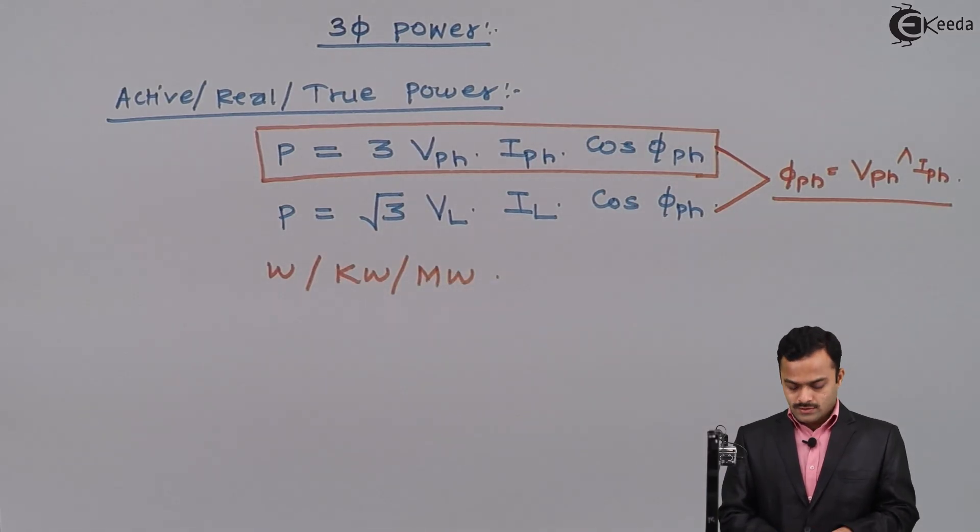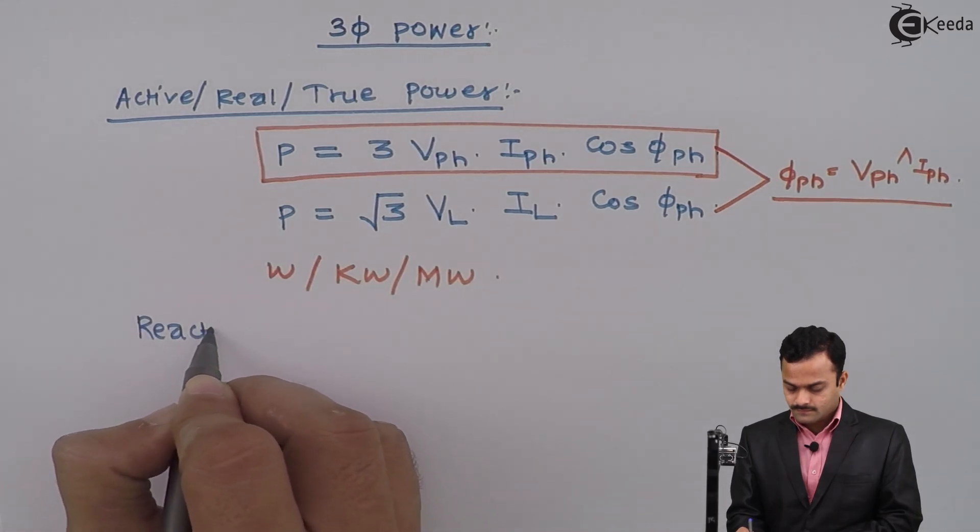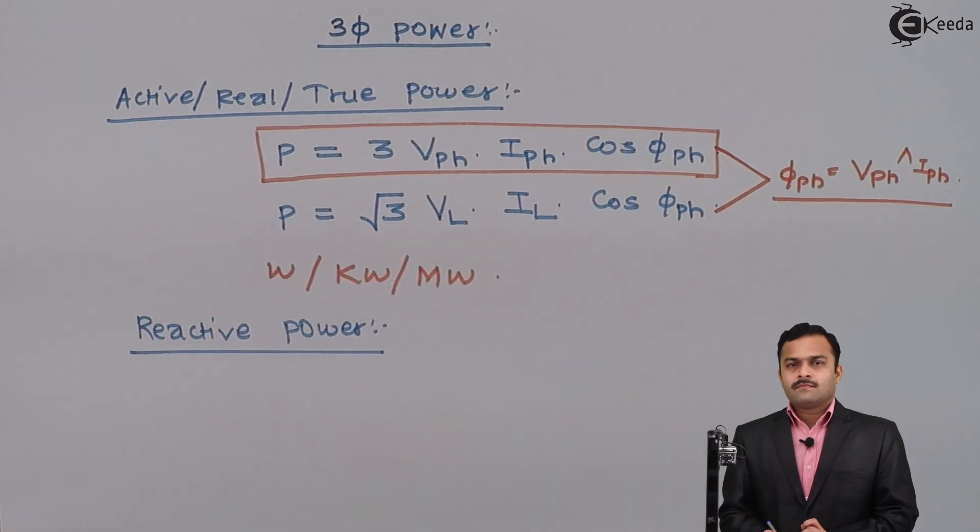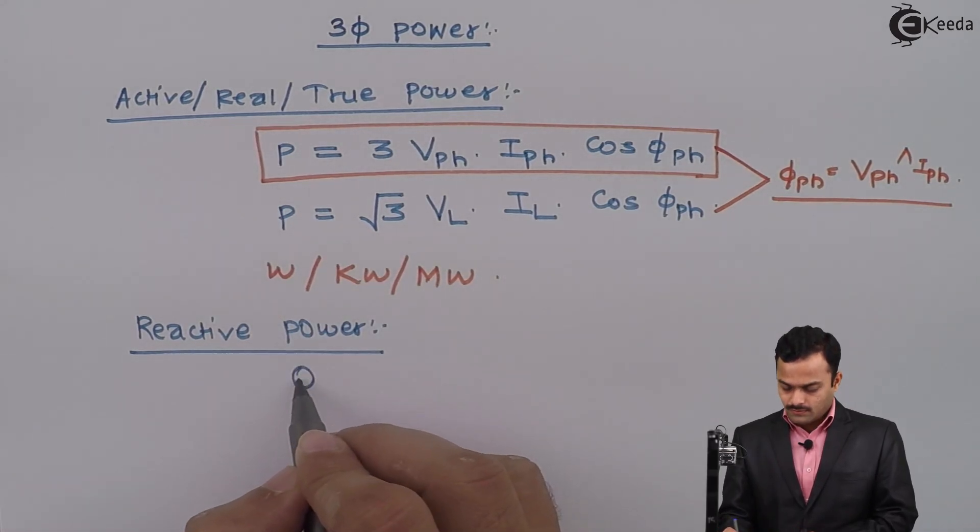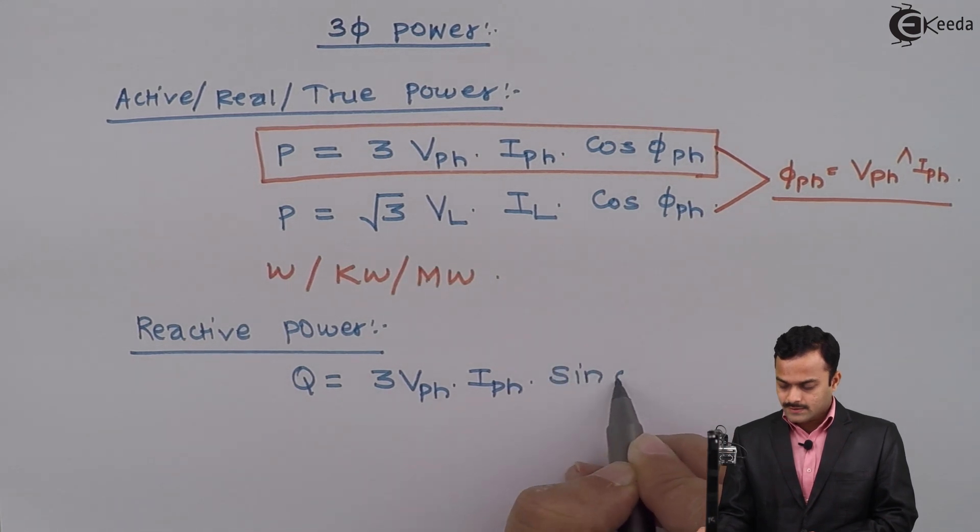Let's go to second type of power that is reactive power. That is given as Q equal to 3 VPH, IPH, sin φPH.